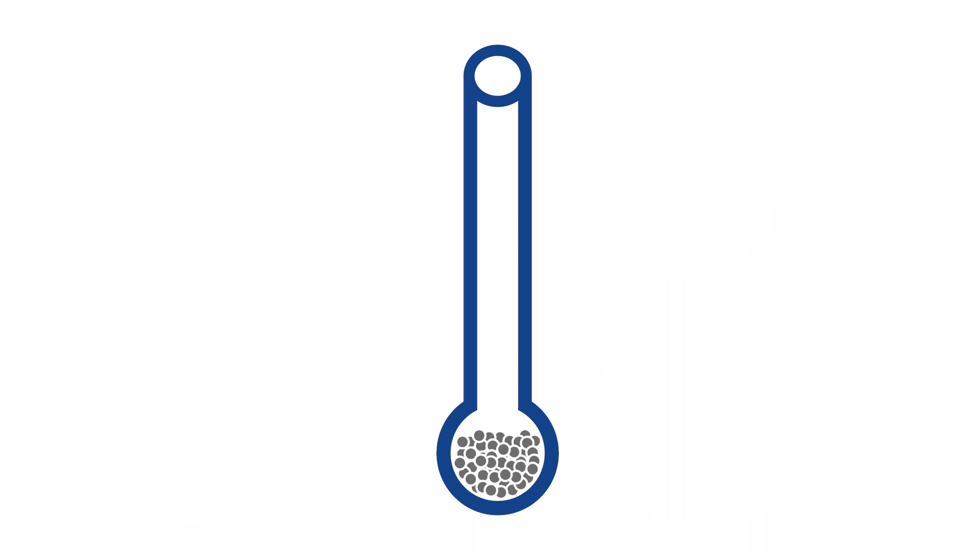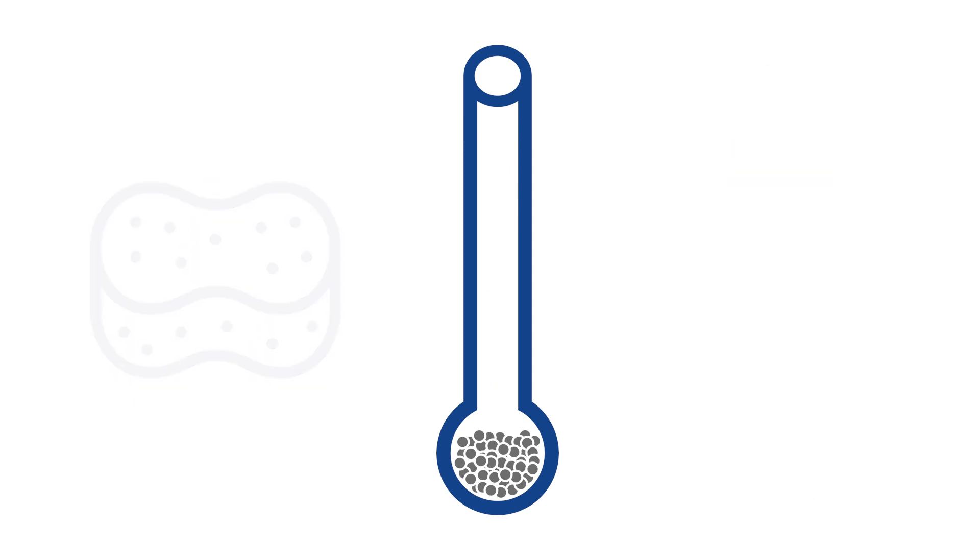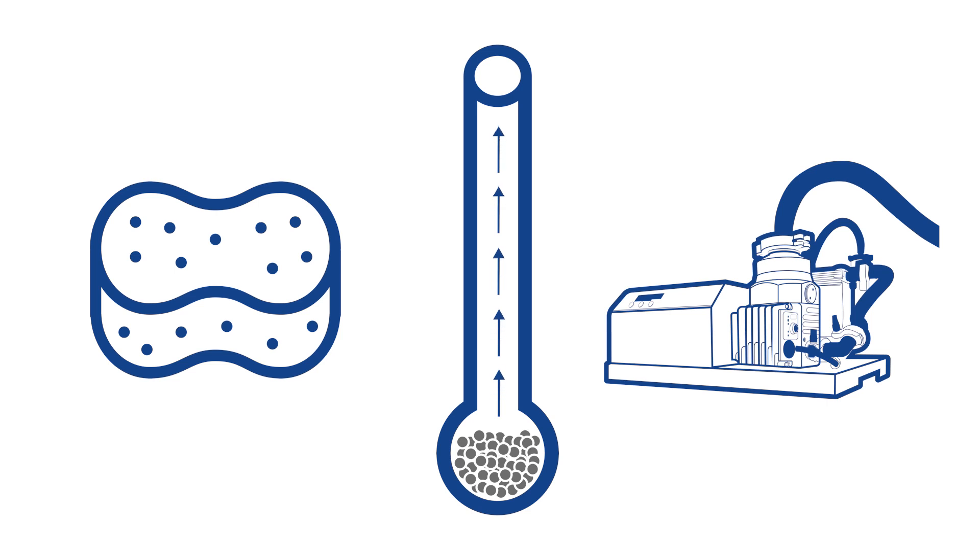When the material is known to have a high moisture content, flowing nitrogen can speed up the degas time, also known as a flow degas. When working with microporous samples, a high vacuum degas is preferred.